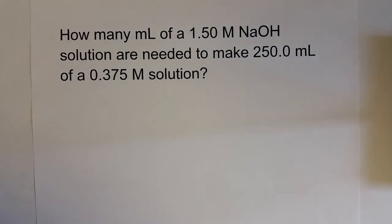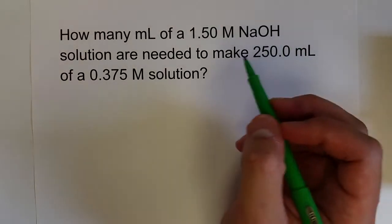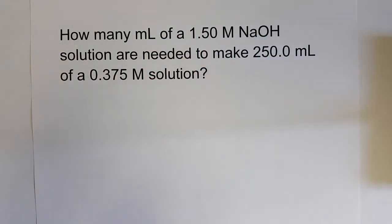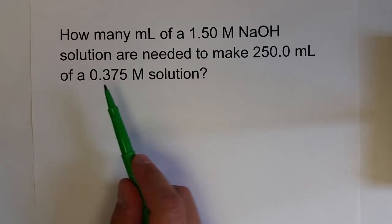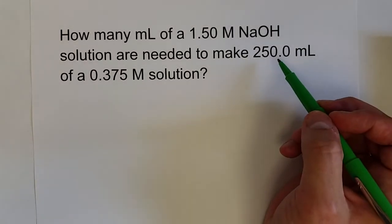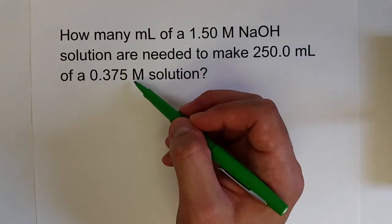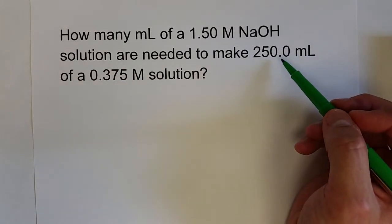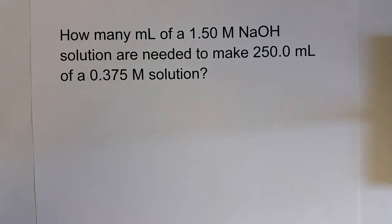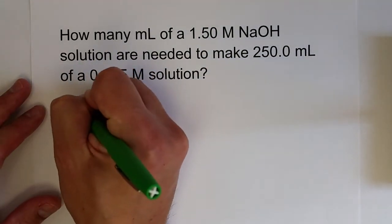Let's try out one of these calculations. In this problem, they're asking how many milliliters of a 1.5 molar sodium hydroxide solution are needed to make 250 milliliters of a 0.375 molar solution. So this is the scenario where I know what solution I want to make, I know how much of it I need, I've got a stock solution sitting on the shelf, how much of the stock solution do I need to use?